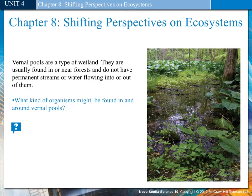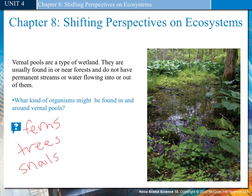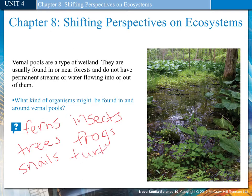What kind of organisms might be found in and around vernal pools? Well, if we look at the picture, we can see ferns, trees, snails, and in the water we could possibly see crustaceans as well as insects, frogs, salamanders, turtles, amphibians, snakes, birds, and other mammals.